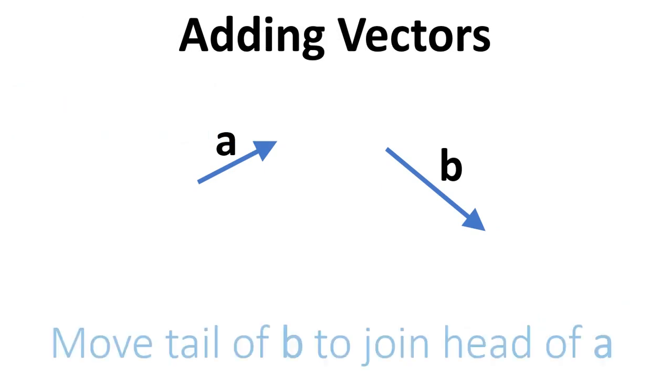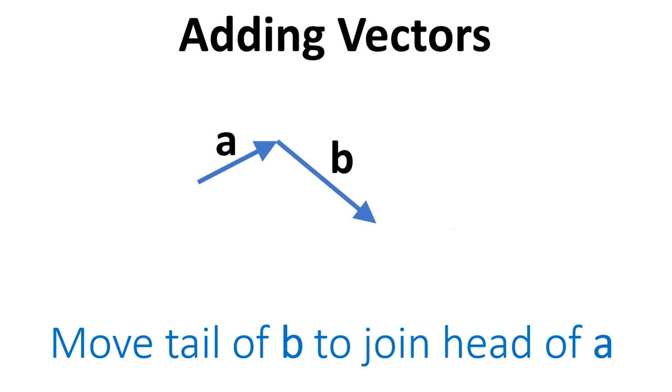If we want to add vectors, then we have to move the tail of one of the vectors to meet the head of the other vector. In this case, we're going to add A and B together, and we've moved the tail of B to meet the head of A, and the new vector, A plus B, goes from the tail of A to the head of B.